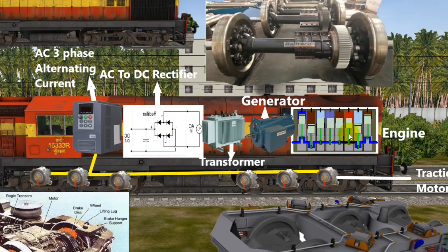The pistons are driven by the diesel engine. When the diesel engine runs, it generates energy and the generator produces AC current. The AC current is passed through a transformer, and the voltage is regulated — it should not be too high. The transformer passes the voltage accordingly.